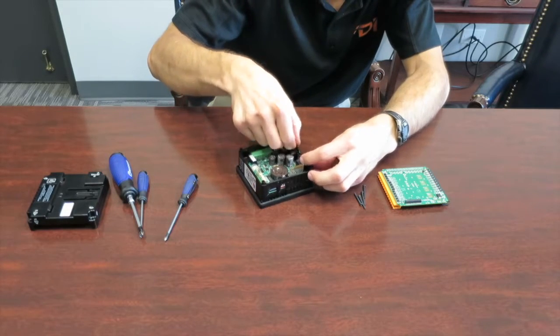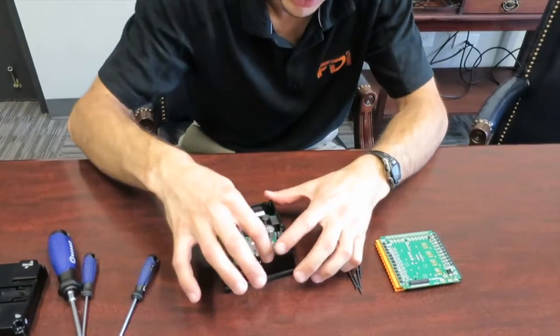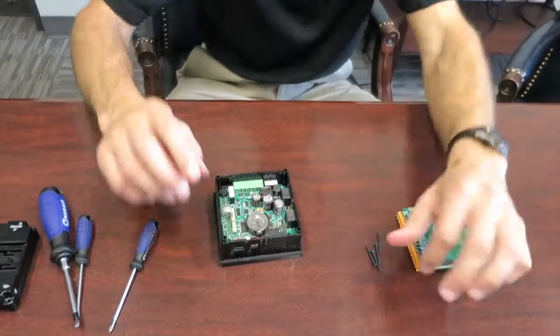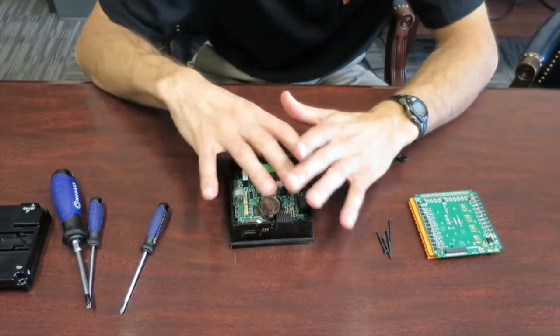If you happen to move any of the little side trim pieces, you can put those back in place. They do kind of slide up and down. Then you're going to see the coin battery in the middle. And just be careful not to touch anything else.